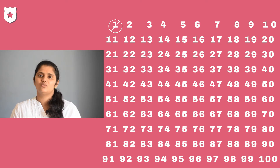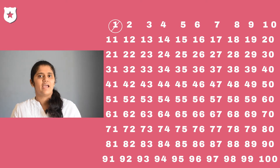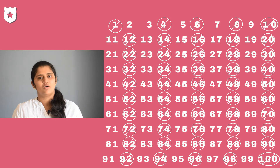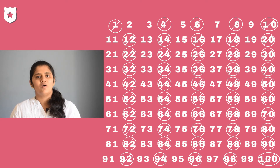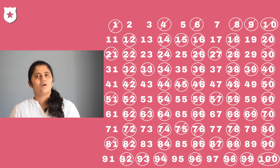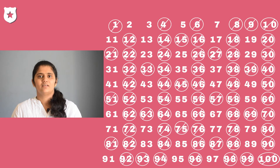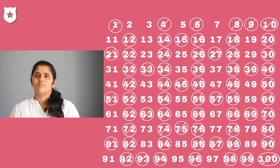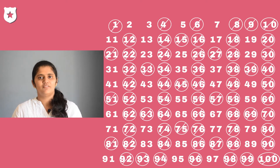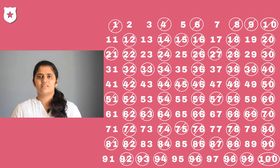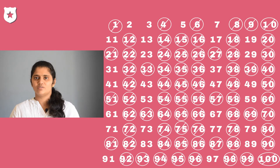So the numbers ending with 2, 4, 6, 8 and 0 are the multiples of 2. So we are striking out all the even numbers. Let's take 3 — 3 is the next prime number. All the multiples of 3 are composite numbers, so we are striking out all those numbers. Let's take 5 — 5 is a prime number. So all the multiples of 5 are composite numbers, so we are striking out all those composite numbers.